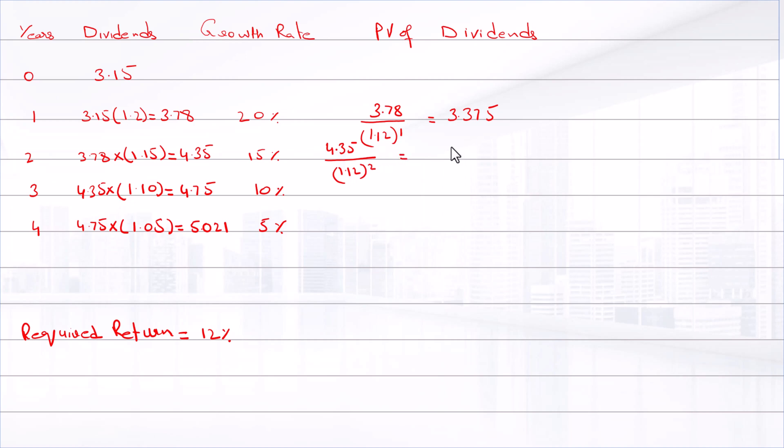Next we will write equation: 5.021, that is D4, divided by Ke, that is 0.12 minus growth rate, that is 0.05.